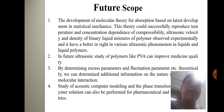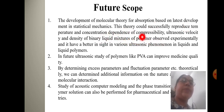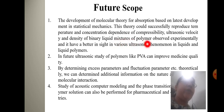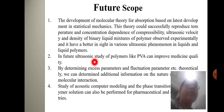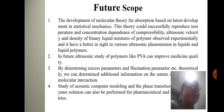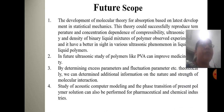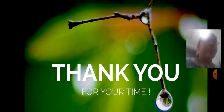Future scope: The development of molecular theory for absorption based on the latest developments in statistical mechanics could successfully reproduce the temperature and concentration dependence of compressibility, ultrasonic velocity, and density of binary liquid mixtures of polymers. In future, ultrasonic velocity of polymers like PVA can improve medicinal quality. By determining excess parameters and fluctuation parameters, we can theoretically determine additional information on the nature and strength of molecular interaction. The study of acoustic computer modeling and phase transition of polymer solutions can also be performed for pharmaceutical and chemical industries. Thank you for watching the presentation.